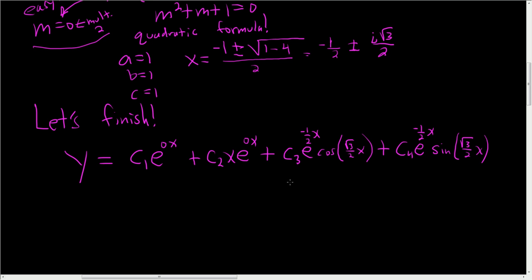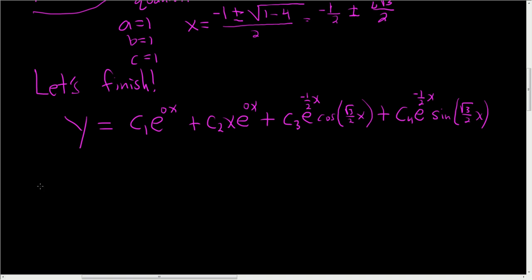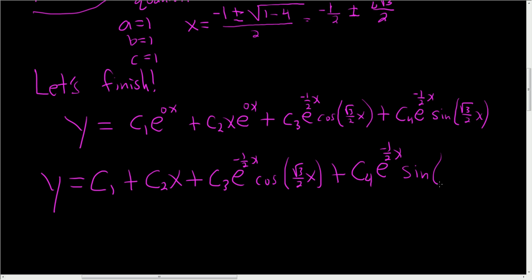Let's clean this up, and we are done. So y, well, e to the 0 is 1, so you just get c1 plus c2x because e to the 0 was 1 plus c sub 3. Nothing is changing here, just copy pasting. e to the negative 1 half x cosine of square root of 3 over 2x, plus c sub 4 e to the negative 1 half x sine of square root of 3 over 2x.